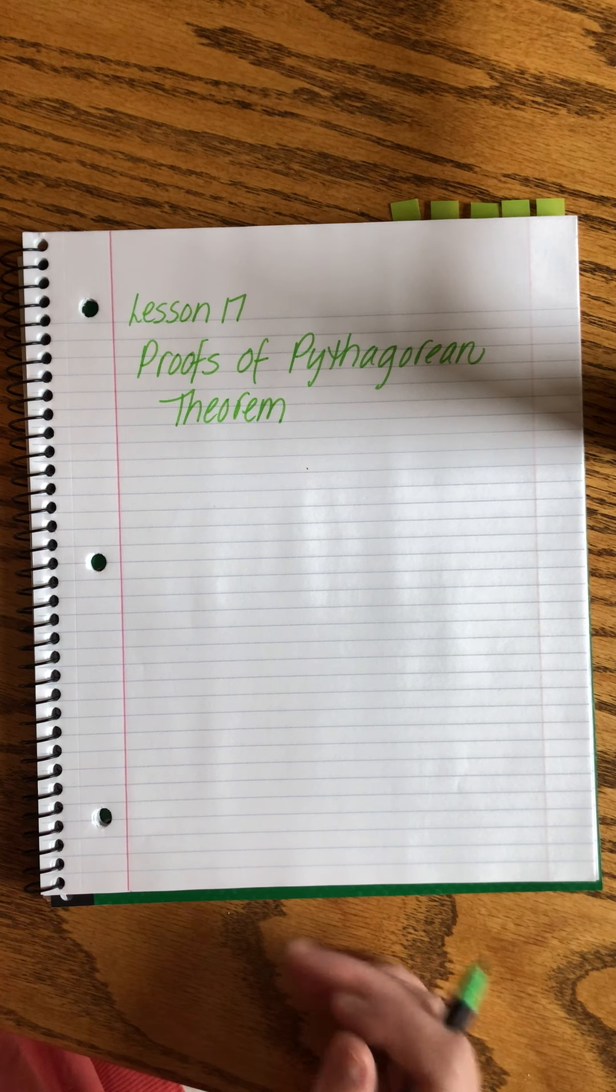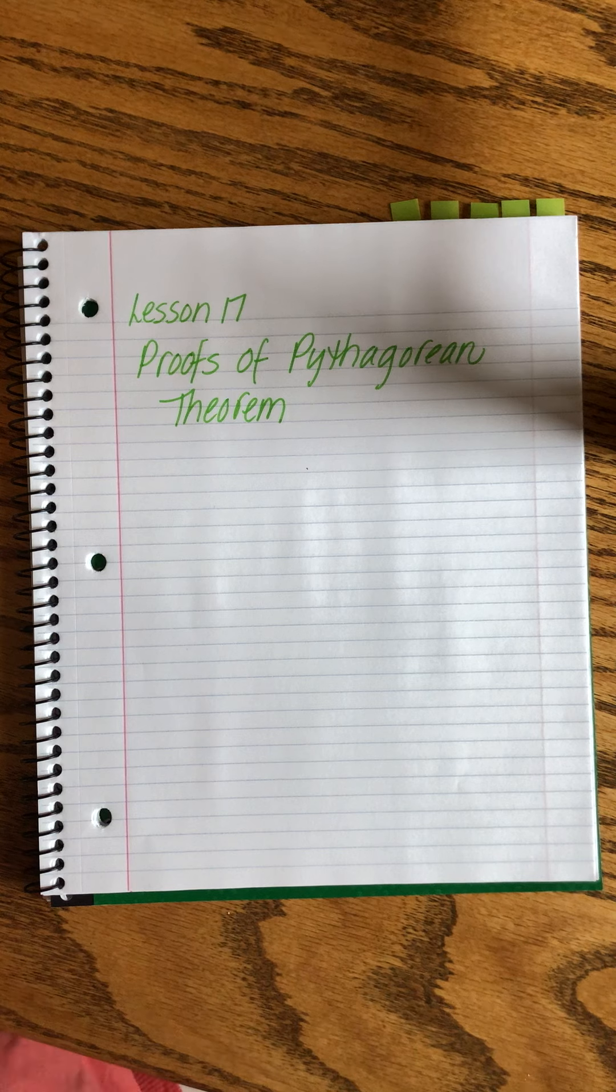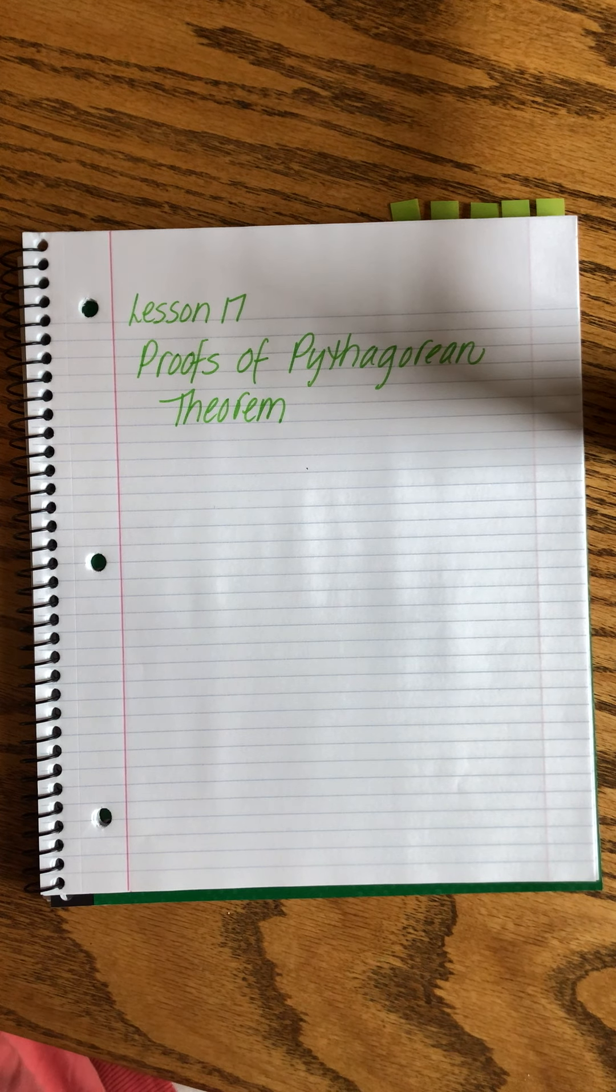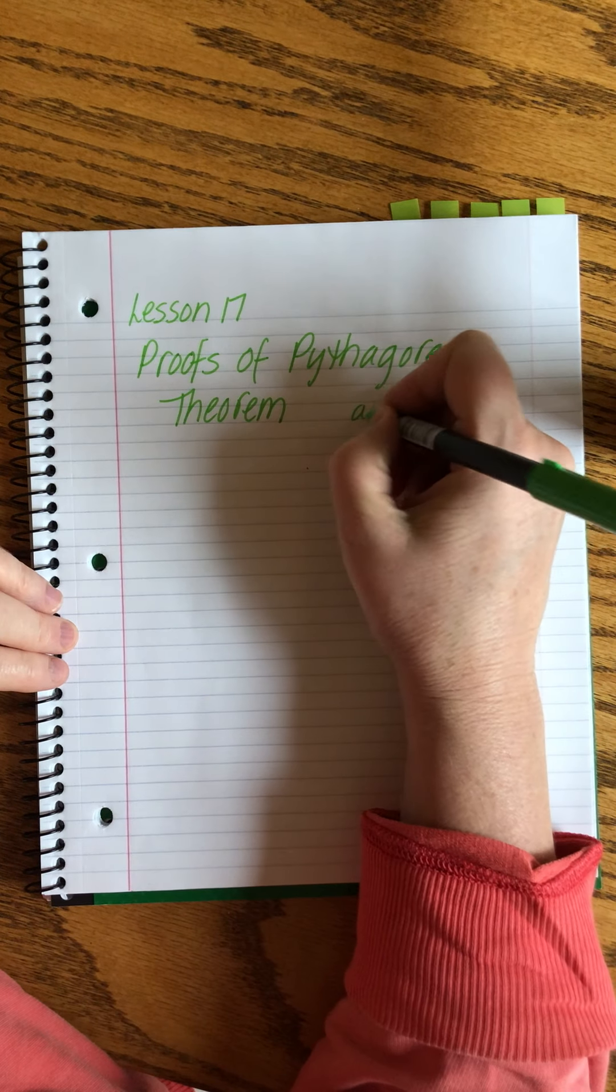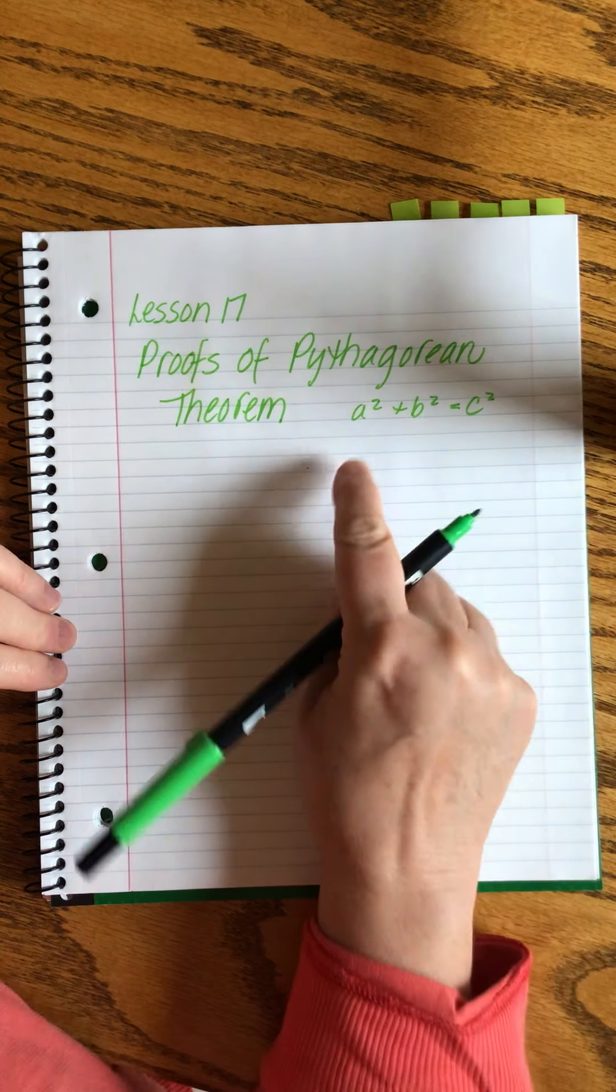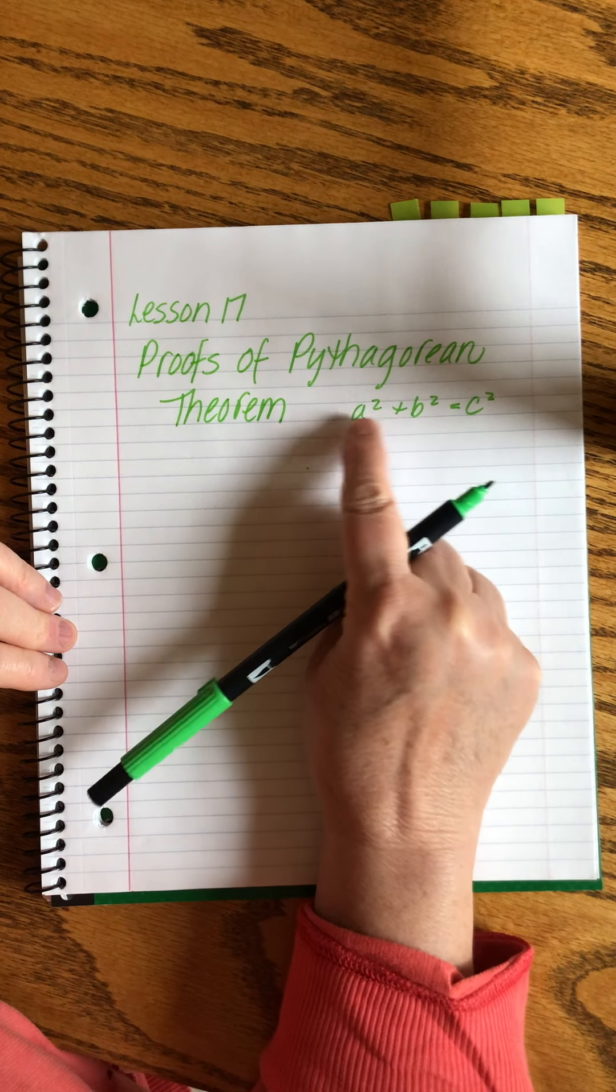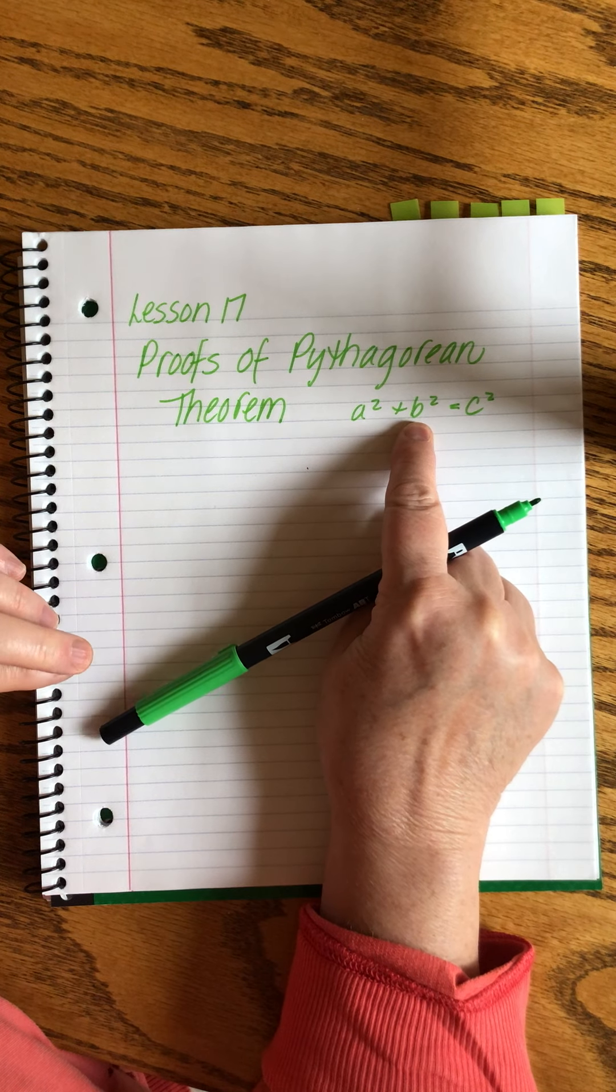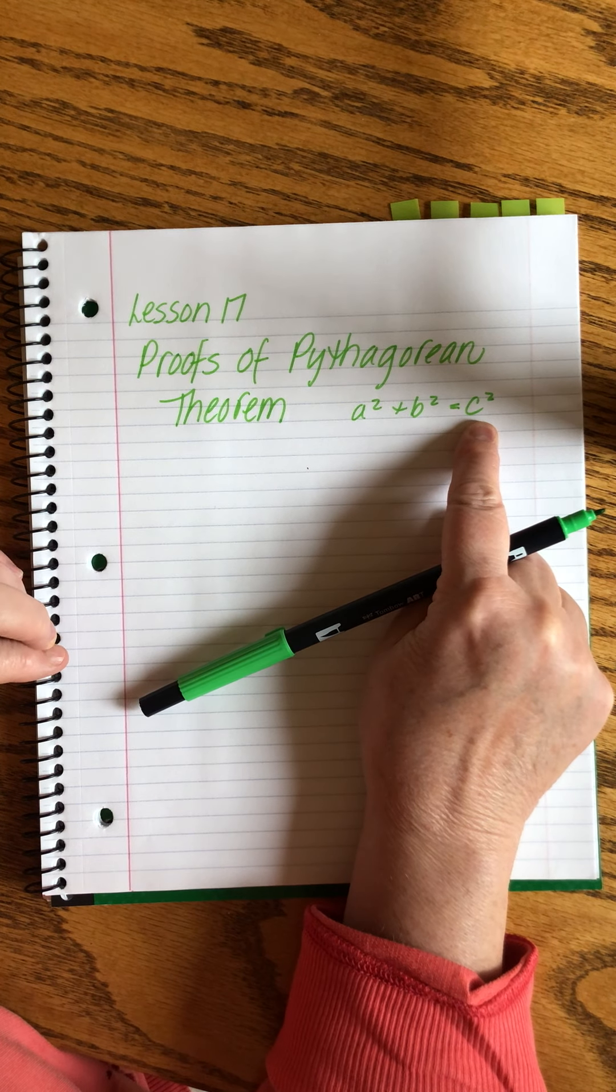In the first part of this lesson I'm going to show you two proofs of the Pythagorean Theorem. We know the Pythagorean Theorem says that if you have a right triangle and you square the lengths of the two legs that will be equal to the square of the hypotenuse.